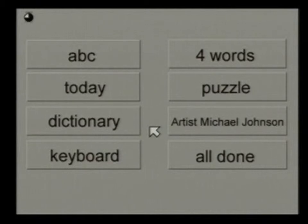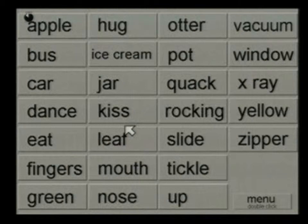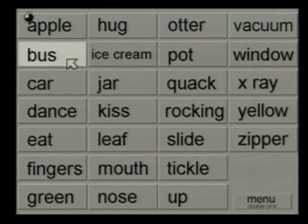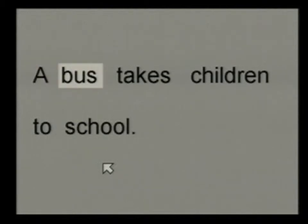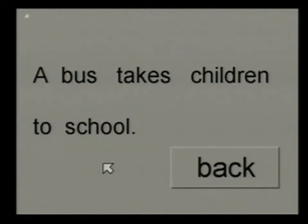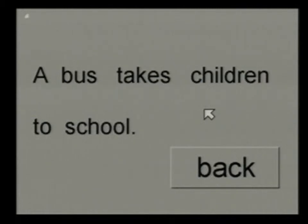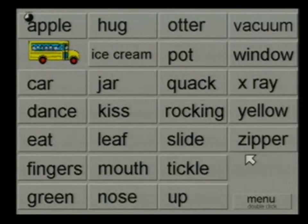The next small program is the Dictionary. When you move the arrow around, it highlights the word, and if you click on the word it launches into a sentence — for example, 'Bus: A bus takes children to school.' Your child can move the arrow over any of the words and the program will say what that word is, providing feedback. If they don't know a word, the program tells them. When you click Back, the word disappears and a picture takes its place.